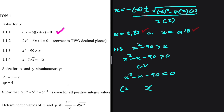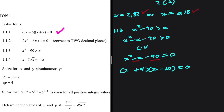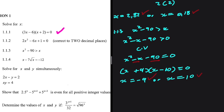In factorizing, we are looking for two numbers that when we multiply we get minus 90, and when we add we get minus 1. That is plus 9 and minus 10, giving us (x+9)(x-10) equals 0. So x equals minus 9 or x equals 10. These are our two critical values.